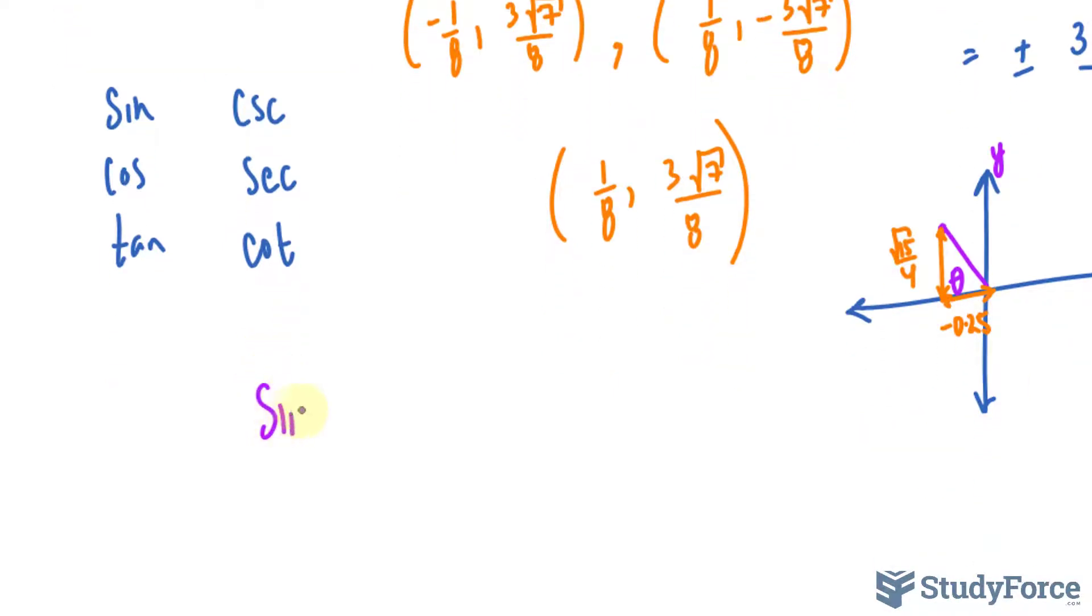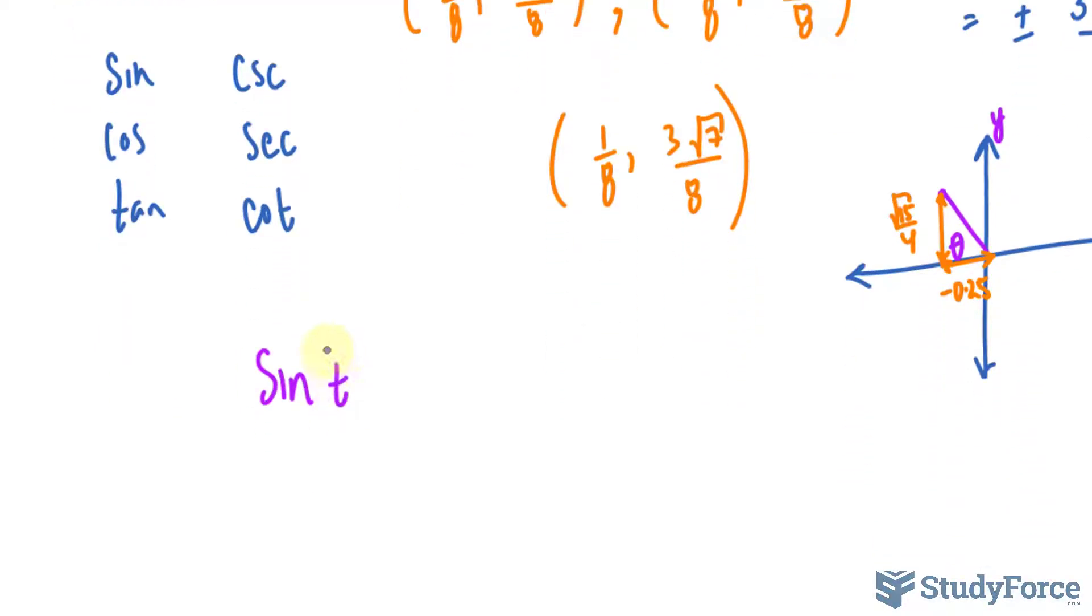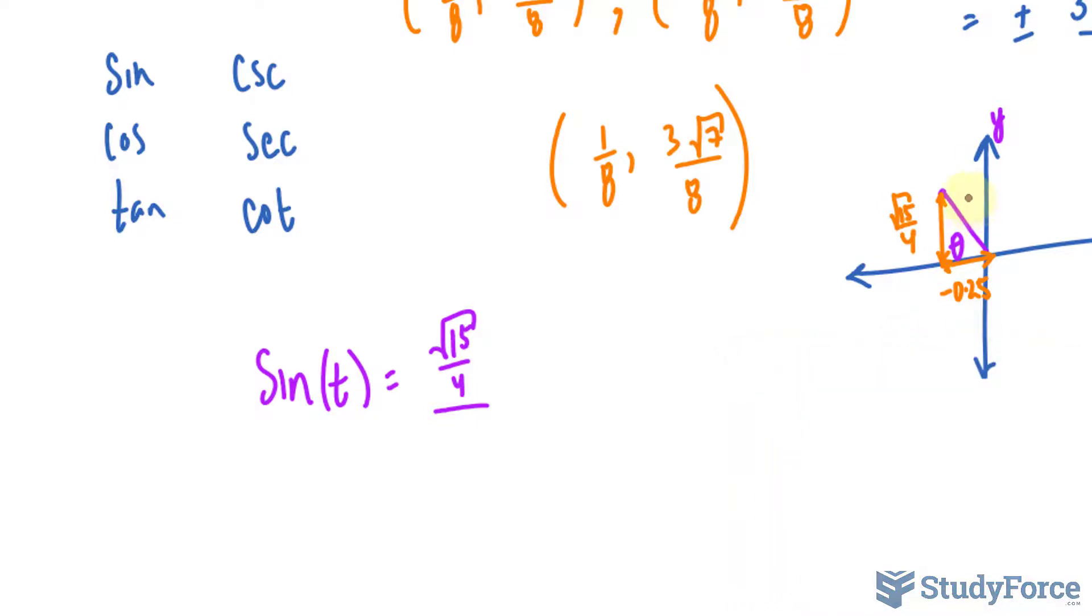So for sine, and they want us to use the letter t. So sine t, sine is opposite over hypotenuse. Opposite is 15 over 4 divided by the hypotenuse, and we would need to find the hypotenuse using the Pythagorean theorem. Therefore, if you were to use the Pythagorean theorem, you would find out that the hypotenuse is 1. So that's opposite over 1. The answer is the square root of 15 over 4.